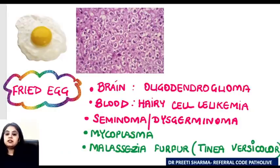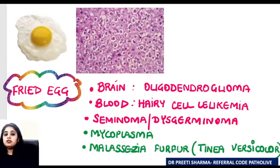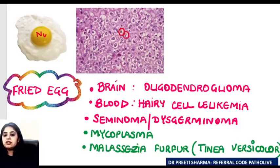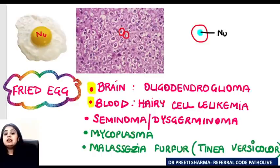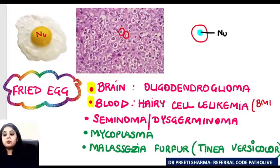Let's start with the easiest one — the breakfast that pathologists start with: fried egg appearance. Fried egg appearance is important in both pathology and microbiology. In pathology, the yellow yolk refers to the nucleus and the whitish area is the clear perinuclear halo around it. So there's a nucleus and a perinuclear halo that you notice. In hairy cell leukemia, it's the bone marrow biopsy — not the aspirate — that shows fried egg appearance.